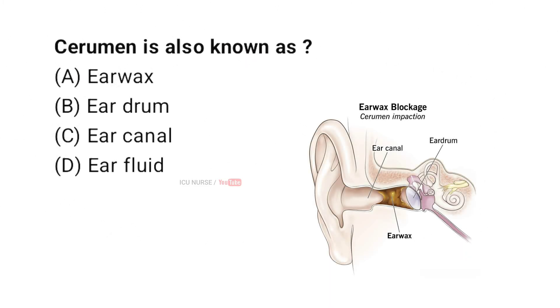Cerumen is also known as: A. Earwax, B. Ear drum, C. Ear canal, D. Ear fluid. And the correct answer — drop your answers in the comment section below.